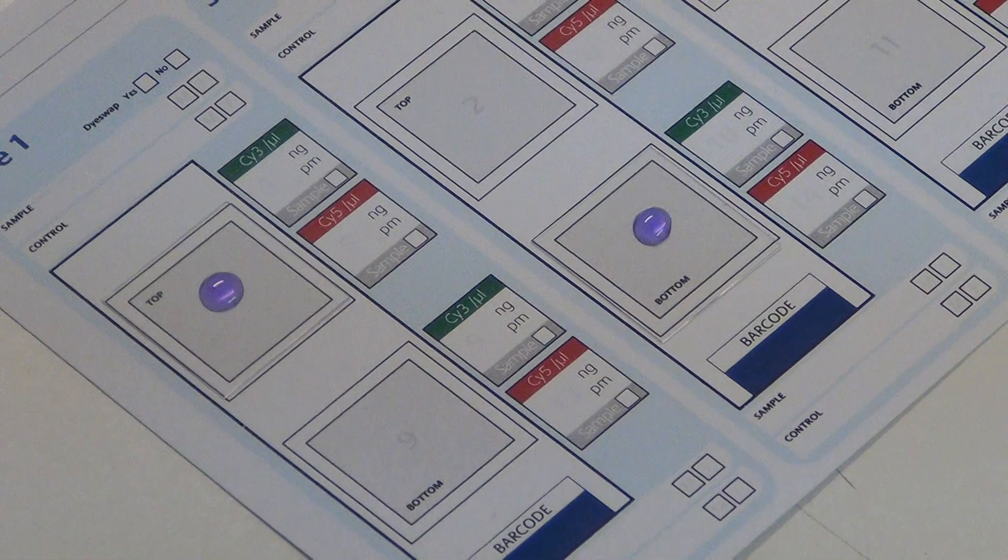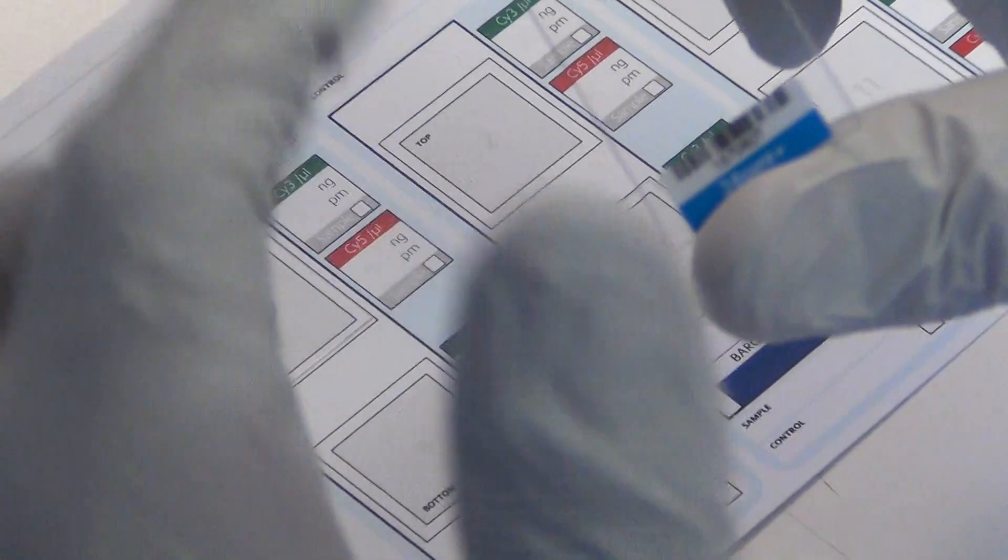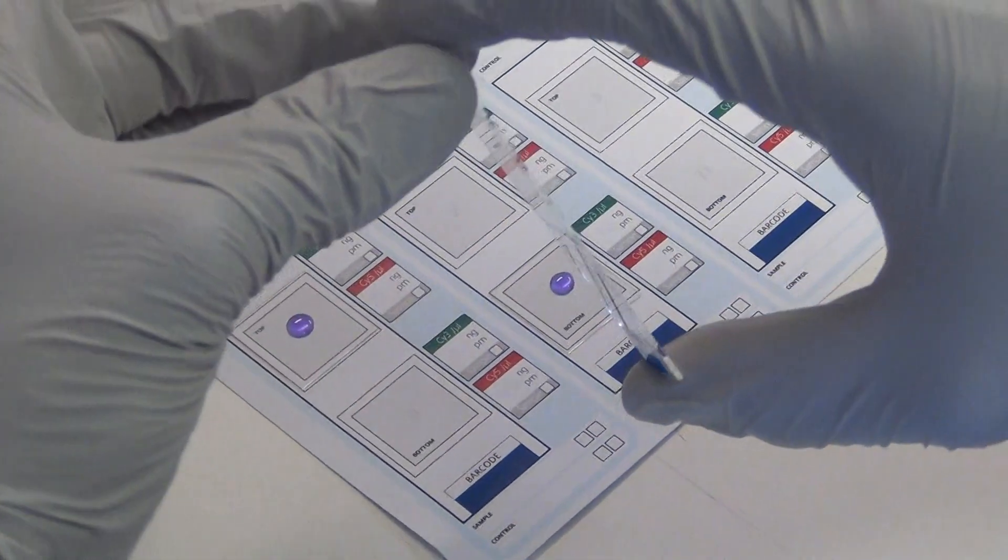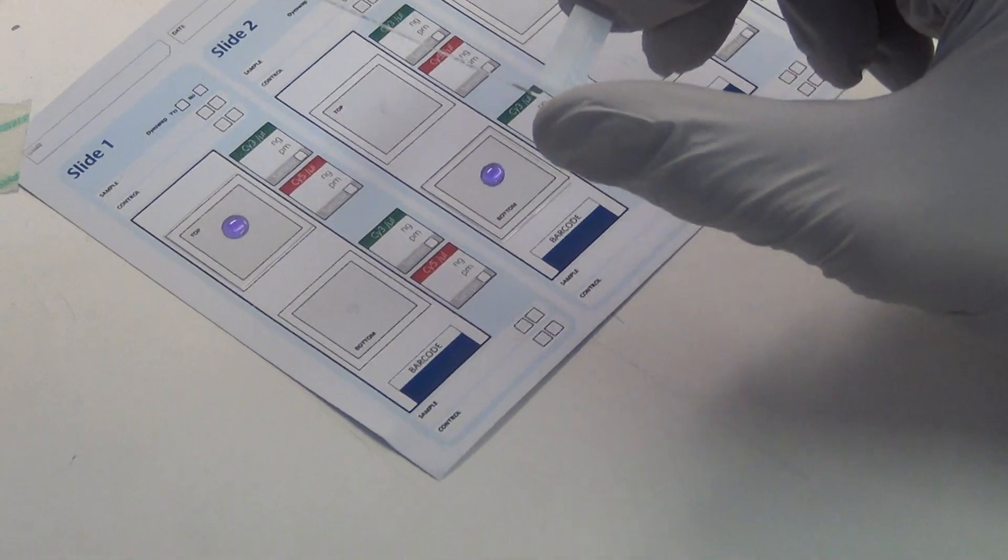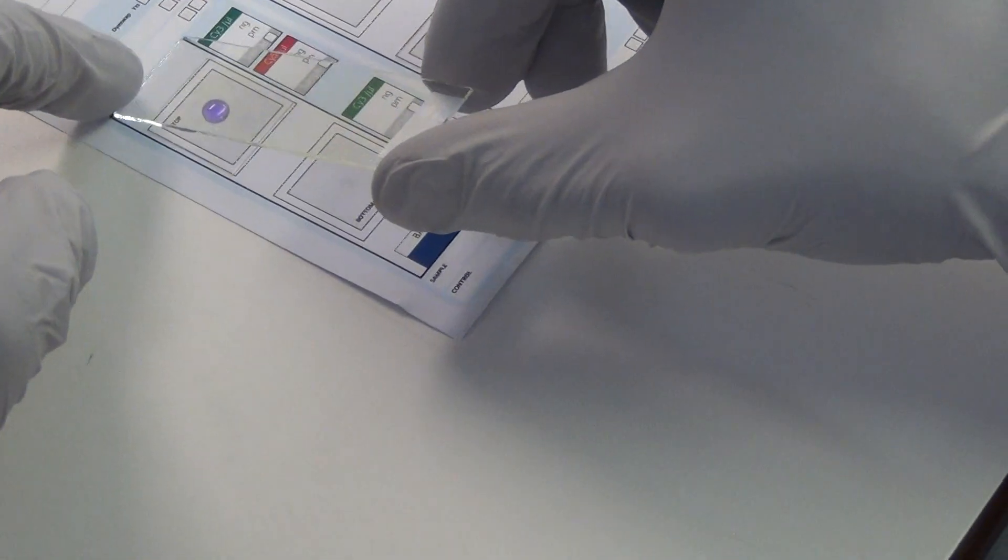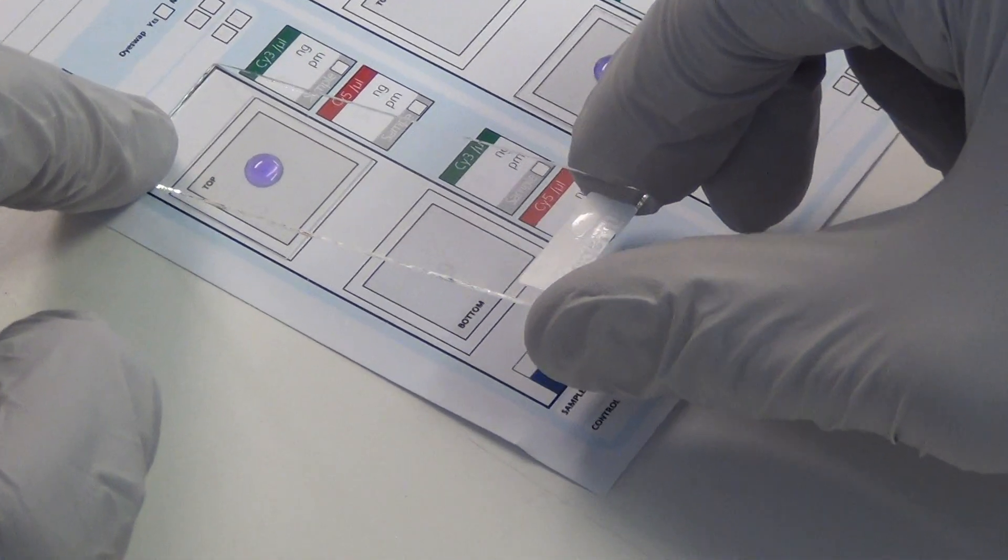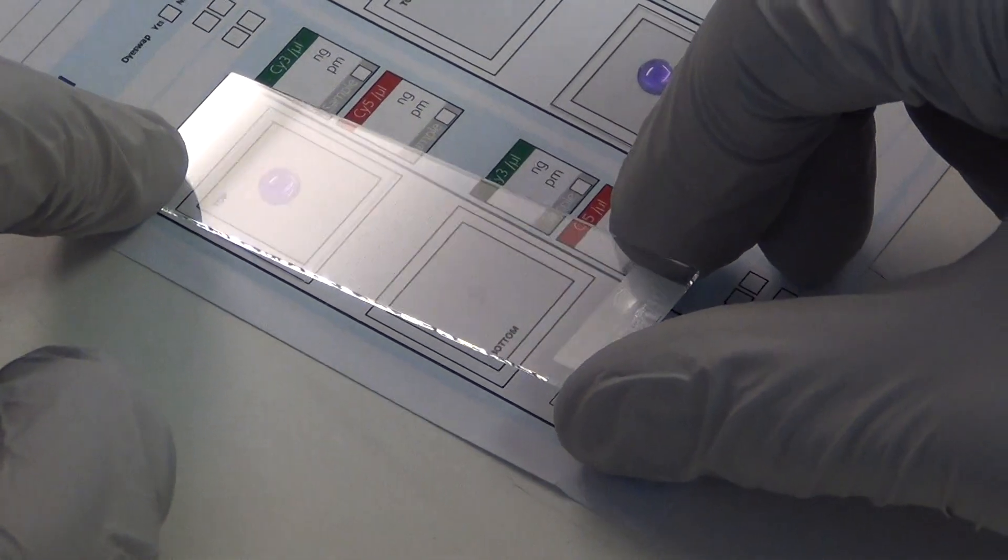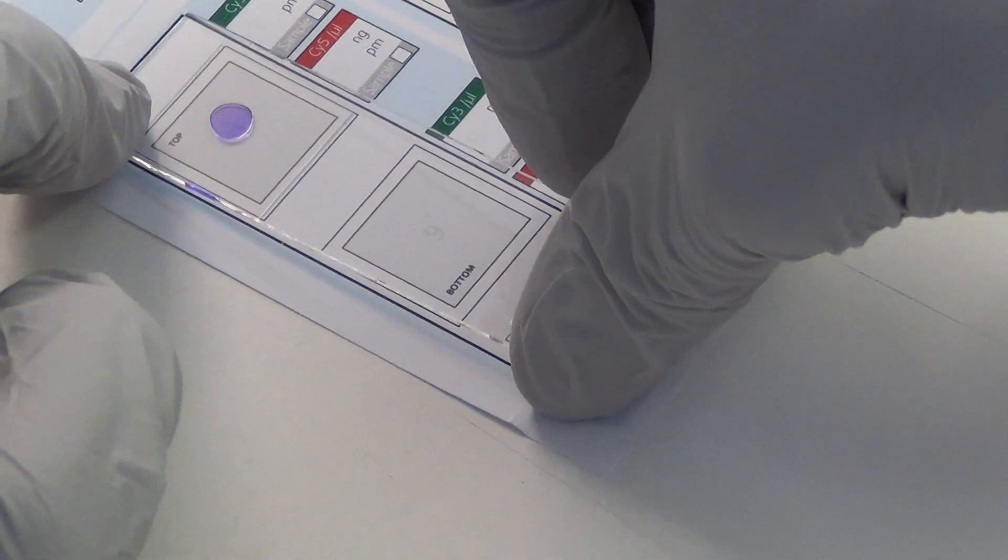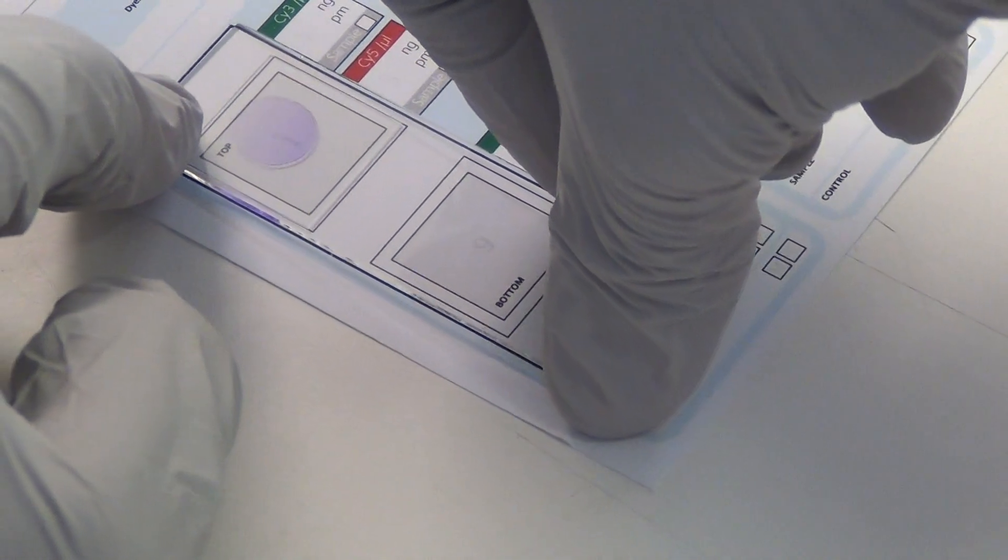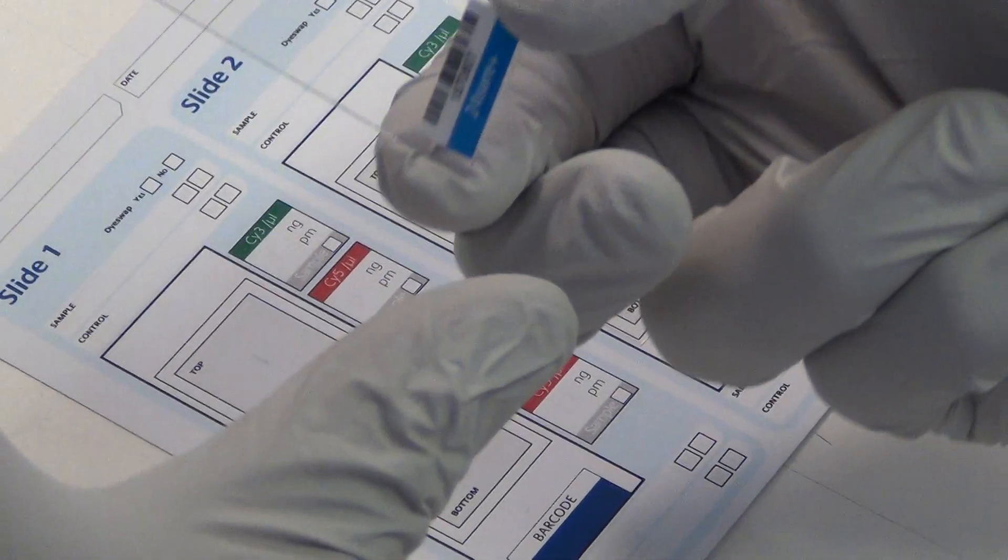Third, lower the active side of the array slowly onto the top coverslip at an angle until contact, again avoiding any formation of air bubbles.